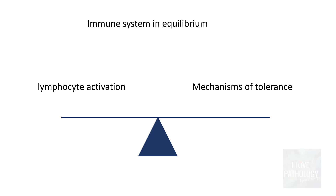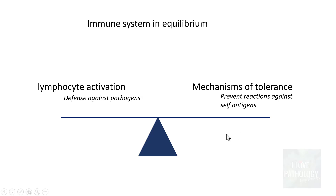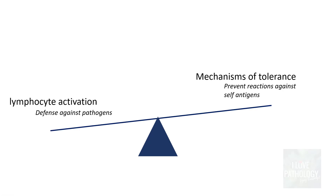If you recollect my earlier video on autoimmunity, we learned in detail about self-tolerance. Our body's immune system is in equilibrium — a balance between lymphocyte activation and the mechanisms of tolerance. Lymphocyte activation is important for defense against pathogens, while mechanisms of tolerance prevent reactions against self-antigens. Whenever there is an imbalance or failure in the mechanisms of tolerance, that is when autoimmunity develops.